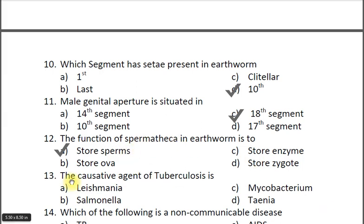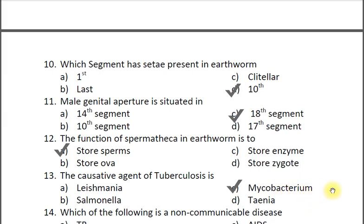Question thirteen: The causative agent of tuberculosis is — A Leishmania, B Salmonella, C Mycobacterium, D Thymus. The correct answer is C Mycobacterium. Mycobacterium tuberculosis causes TB. Another species, Mycobacterium leprae, causes leprosy.